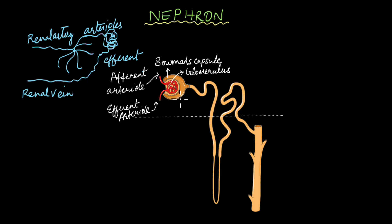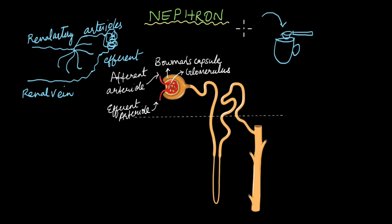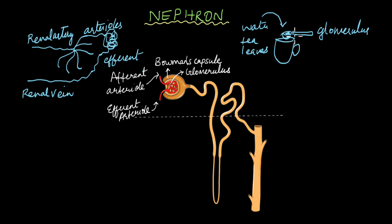The glomerulus is enclosed within a cup-like structure known as Bowman's capsule. Whatever substances are filtered from the blood at the glomerulus are caught by Bowman's capsule. Think of it like making tea: you place a filter over a mug and pour the tea mixture in. The tea leaves get stuck in the filter — that's the glomerulus — while the liquid filtrate passes through into the cup below, which represents Bowman's capsule. So the function of Bowman's capsule is to capture the filtrate from the glomerulus.